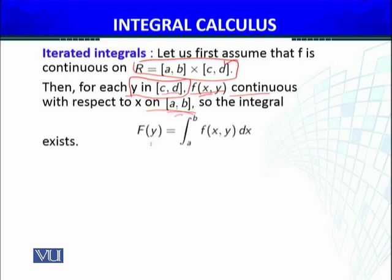Then for each y in [c,d], this interval from where y is coming in that function f(x,y), f(x,y) continuous with respect to x on [a,b]. So the integral F(y) = ∫[a to b] f(x,y) dx exists. We call it F(y) because for each y it is very important. For each y I am defining this one.